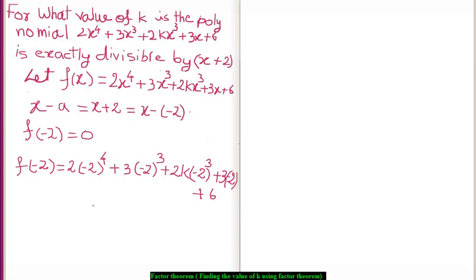Now, this should be equal to 0. Let's see what we get. We get it as 32 minus 24 plus 8k minus 6 plus 6. Now, this should be equal to 0.